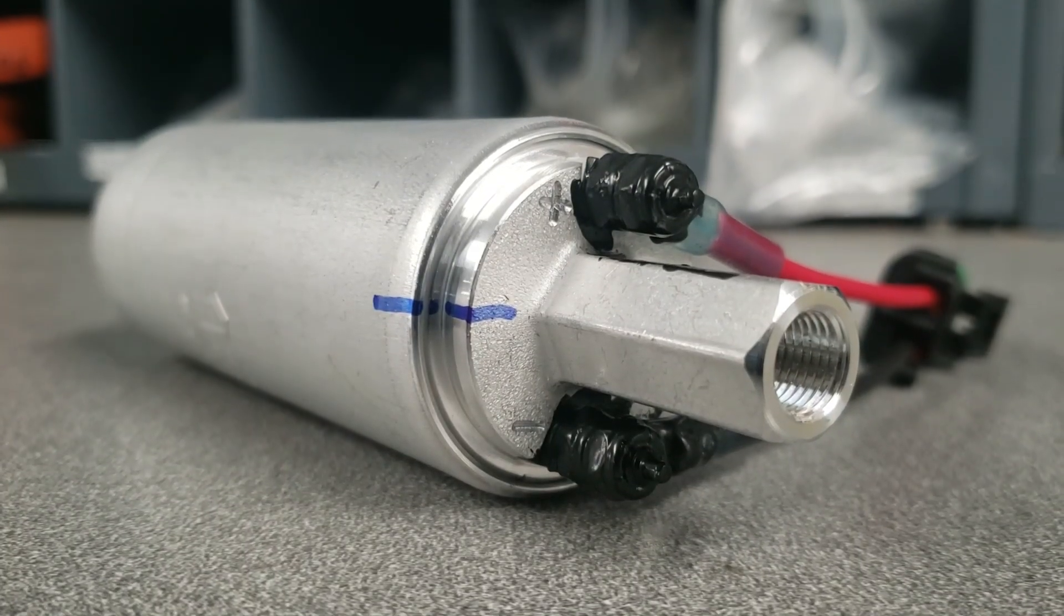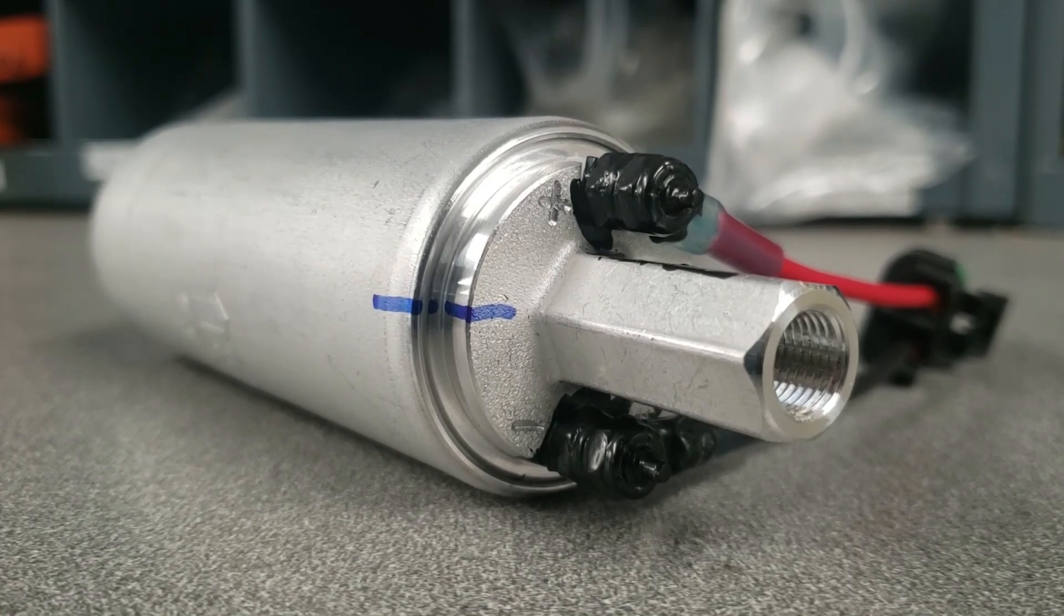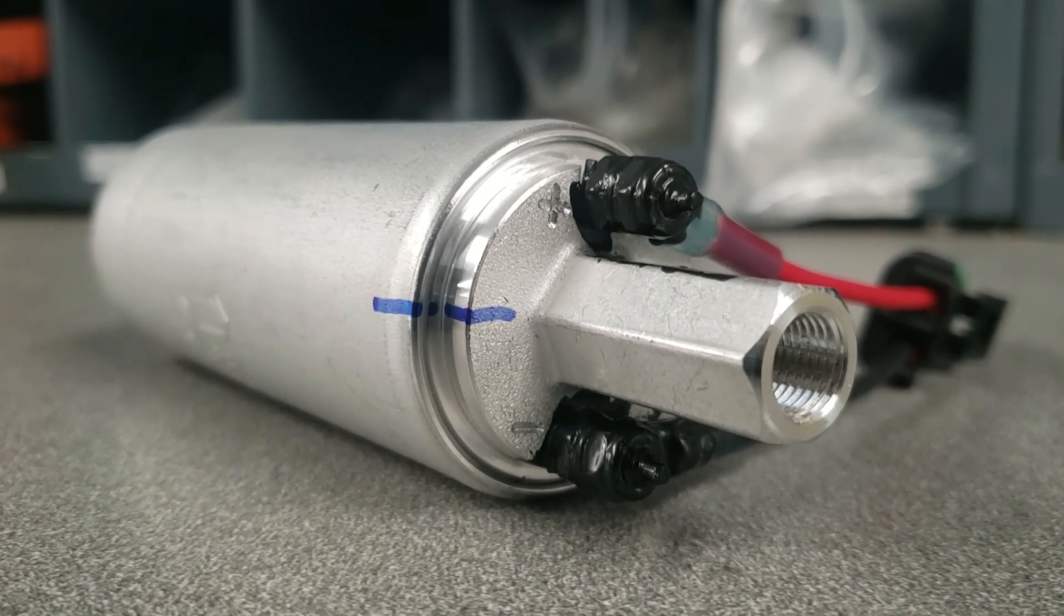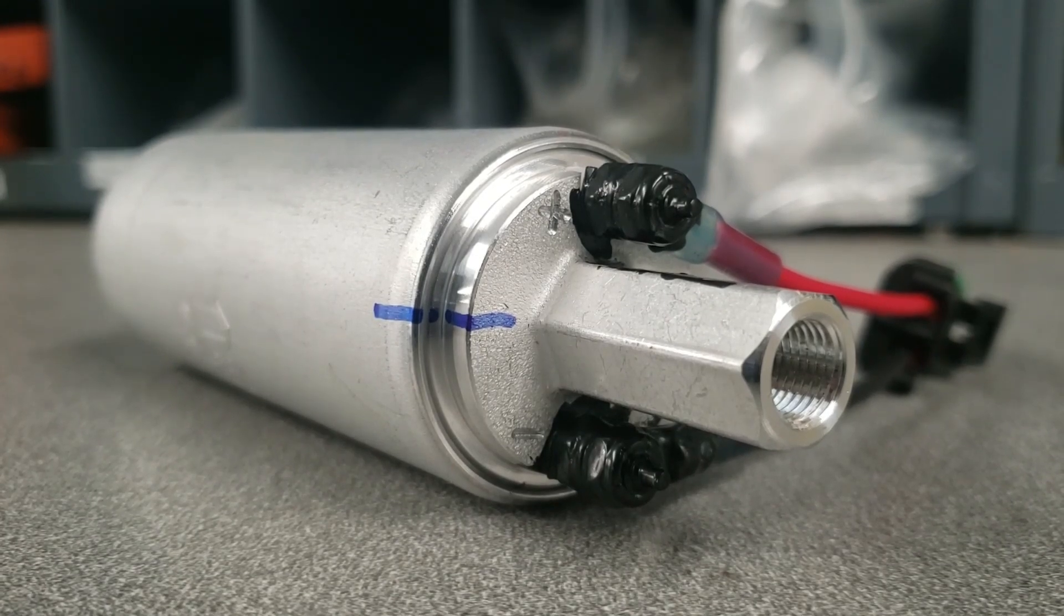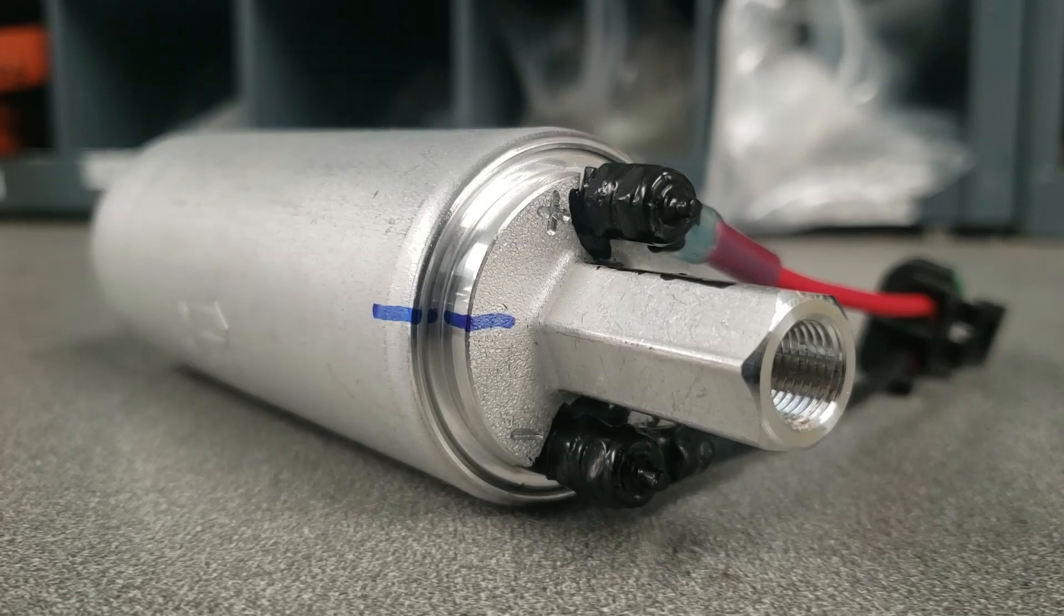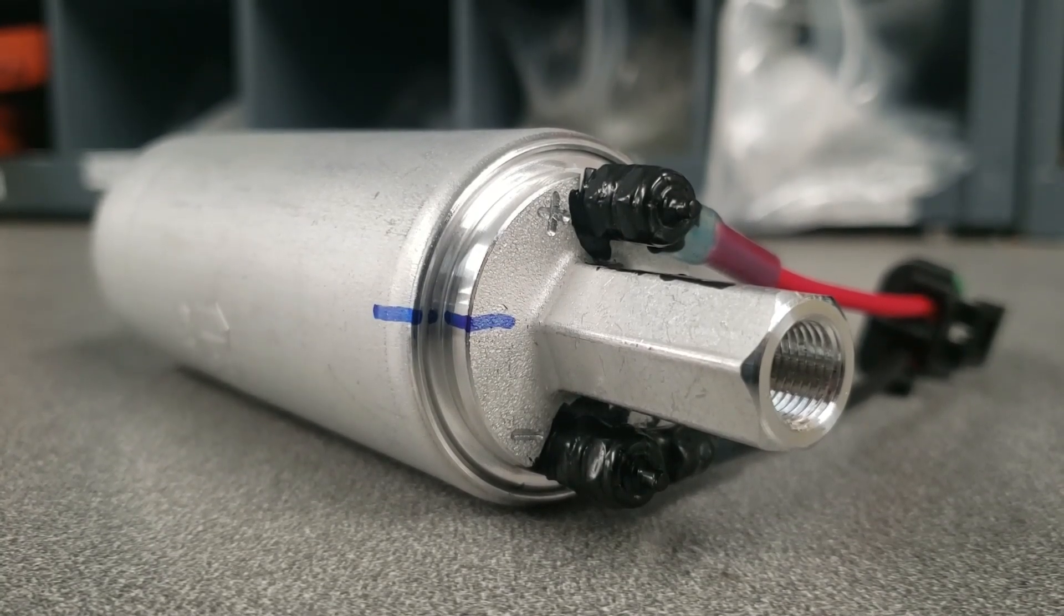So I'd like to go over a couple of things about these Walboro fuel pumps when you go to install them. The first thing that I'd like to point out is the fact that we've got a line that we draw on the pump body and casing. The reason that we do that is so that when you go to install your fuel pump, we need to make sure that you don't actually spin the pump body inside of the casing.